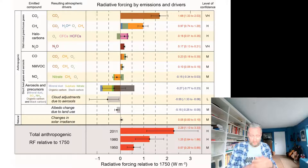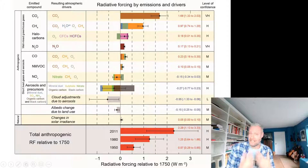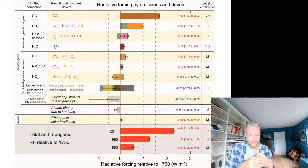Clouds respond to the temperature of the atmosphere, to wind, to the amount of water vapour, and also to the number of dust particles in the atmosphere. People reckon that this has had a net cooling effect. The confidence interval around this central estimate is pretty wide, and that is because clouds are pretty complicated.